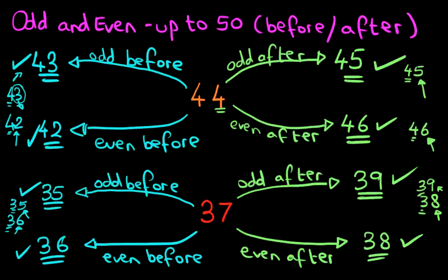And there you have it — odd and even numbers up to 50, with odd and even numbers before and after. It was nice and easy.